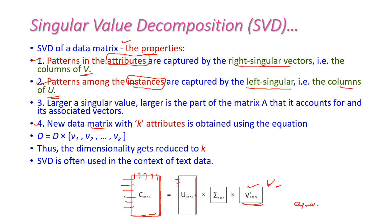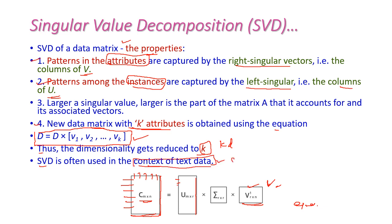The new data matrix with K attributes is obtained by using the equation D equals D into V1, V2, and so on to VK. Hence, the dimensionality of this particular matrix will be reduced to K dimensions. So SVD is used in the context of text data — this is one application of SVD.